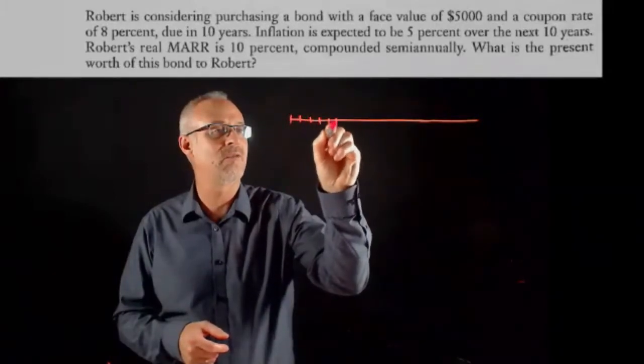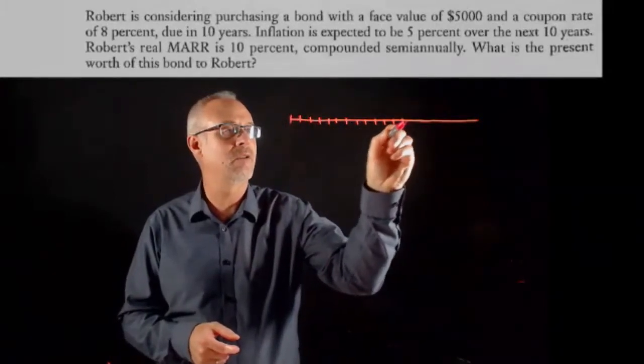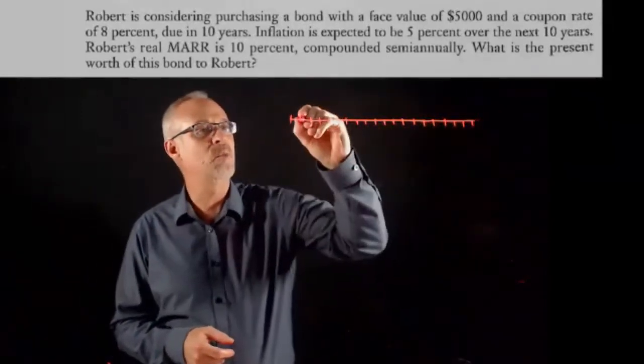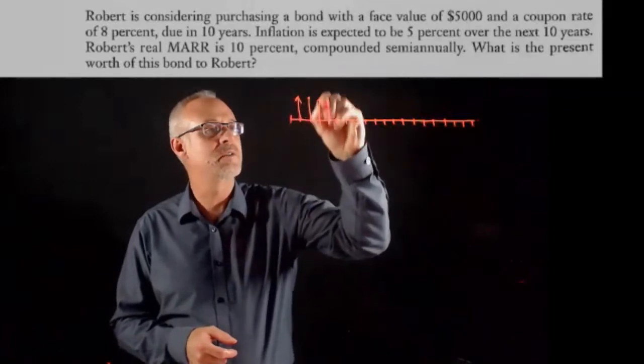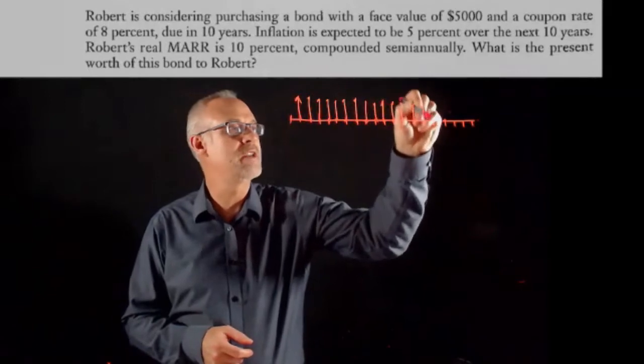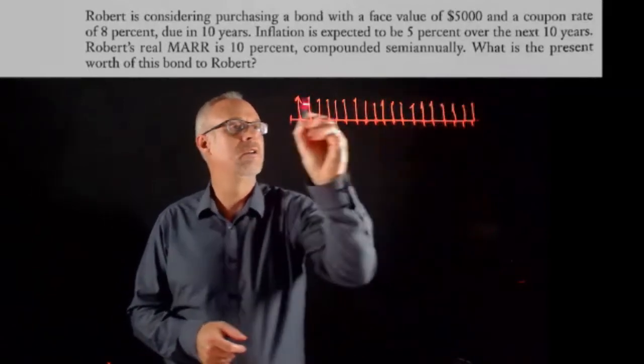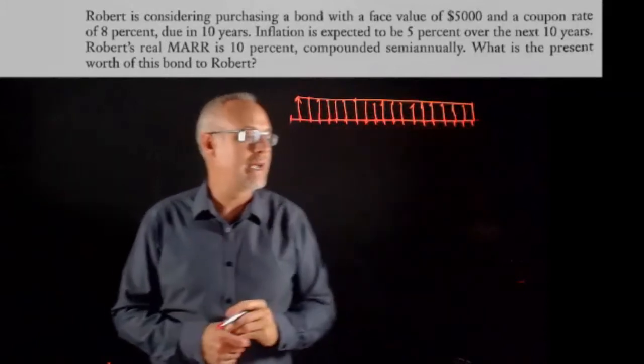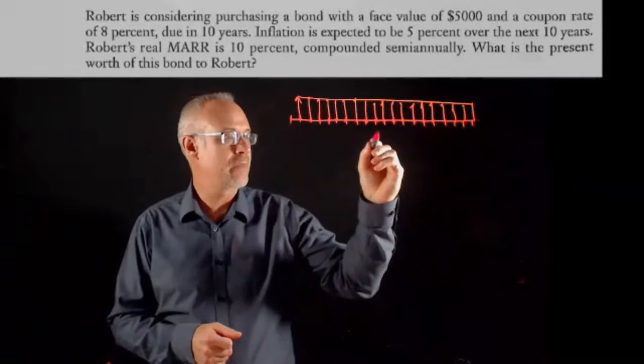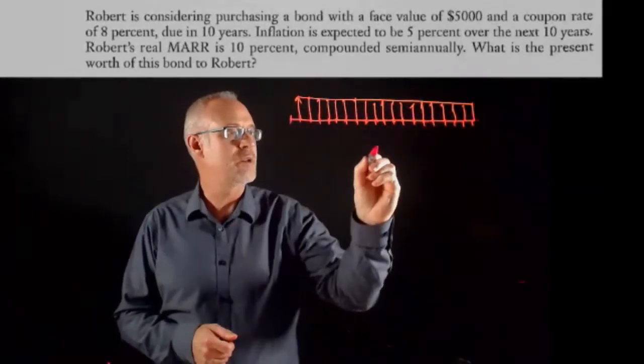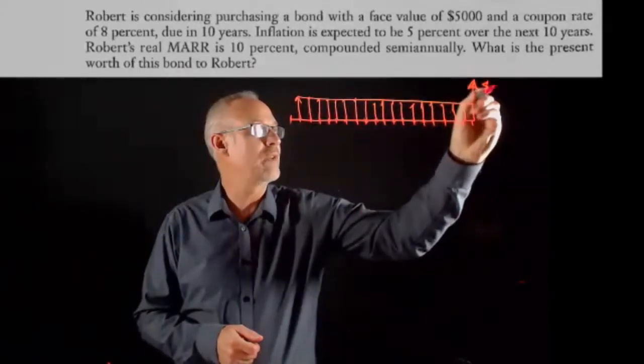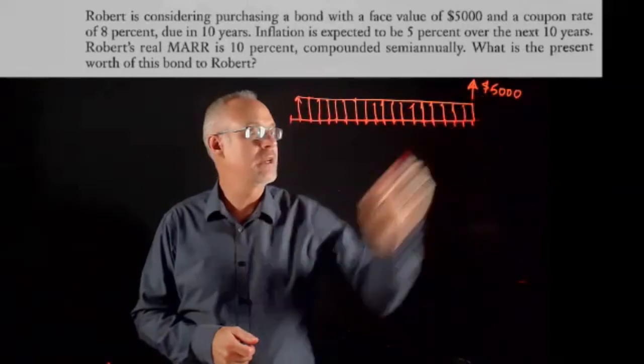So that's 20, and then we're going to have a coupon payment because we're experts on bonds. We know that we'll have all of these coupon payments, and they're up arrows. And we also get the face value - we get $5,000 at period 20.